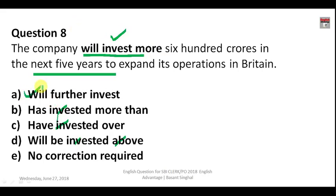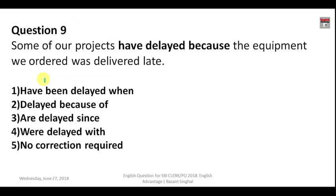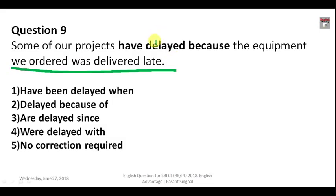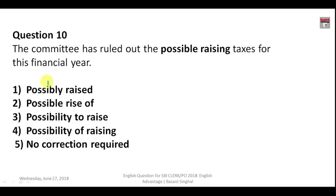Question number nine: 'Some of our projects have delayed because the equipment we ordered was delivered late.' The equipment was ordered and delivered late — both in the past. So you cannot use 'have'; you must use only past tense. Option B — 'some of our projects delayed because the equipment we ordered was delivered late' — is the correct answer.